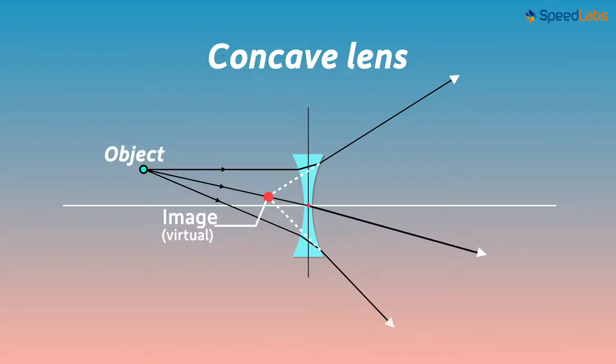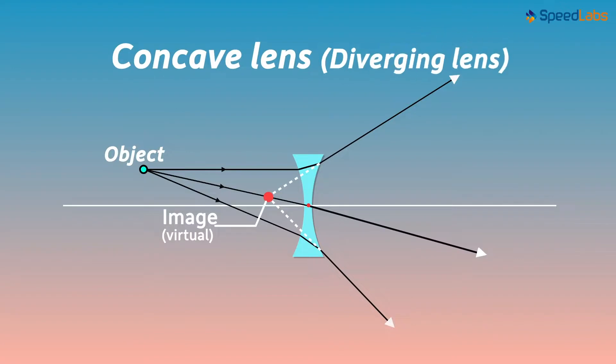So this is a pattern by which concave lens refracts rays of light. It diverges all the light coming from a point. Hence, it's called a diverging lens.